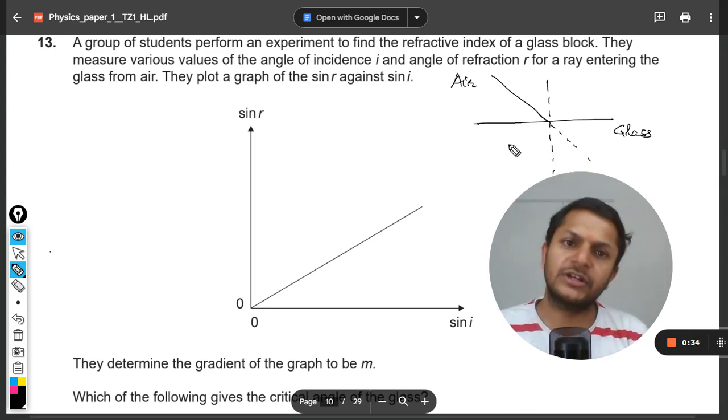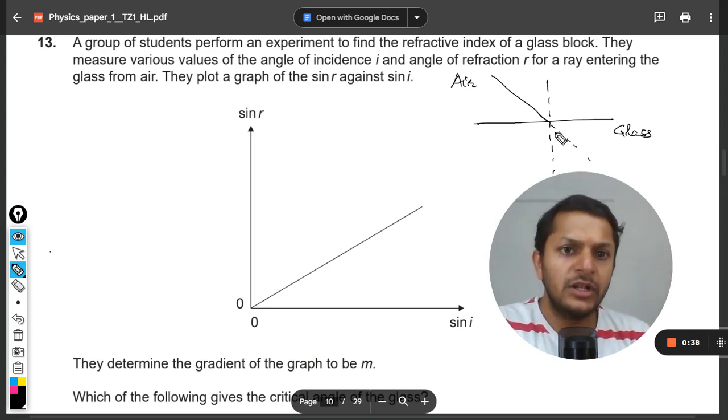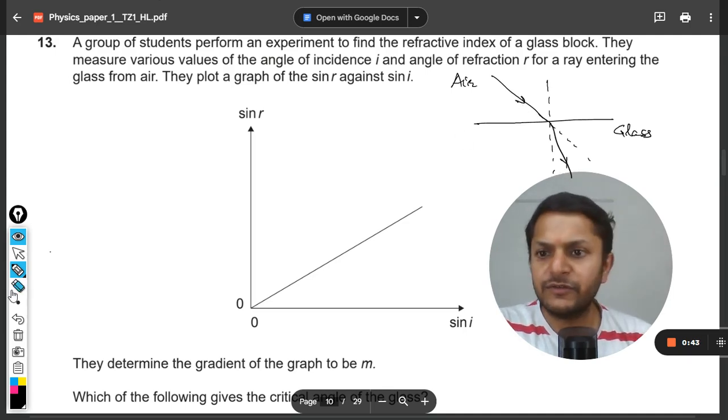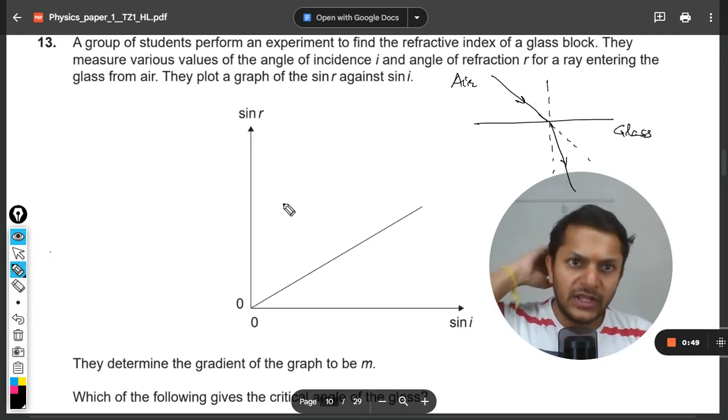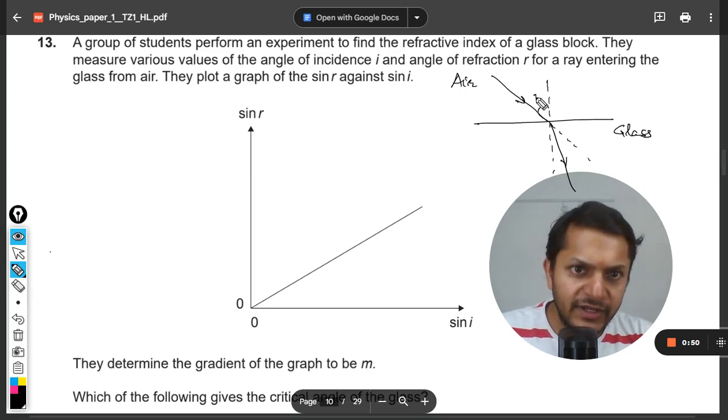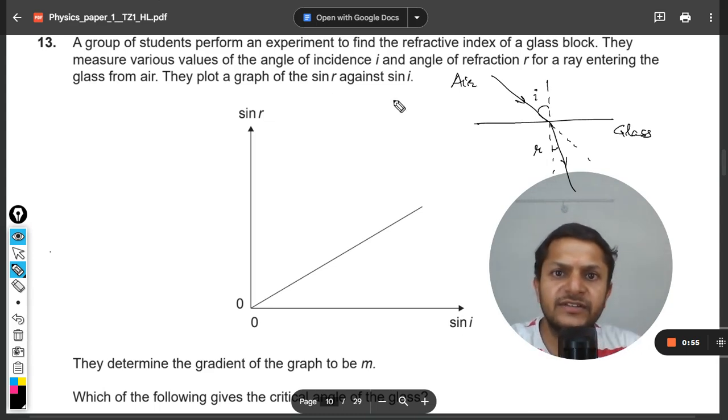So it would now be going like this, it will bend towards the normal like this. So this angle will be taken as i, this angle will be taken as r. They measure the various angles i and r.